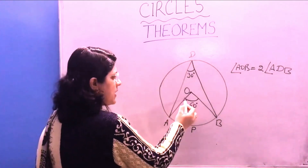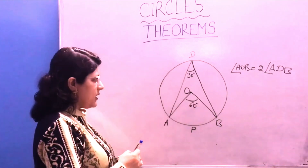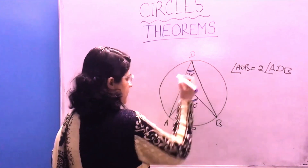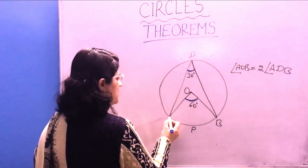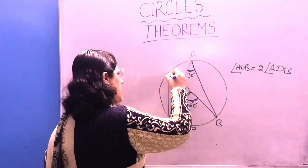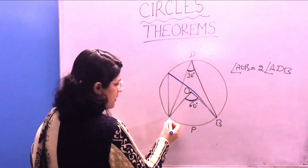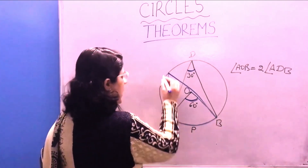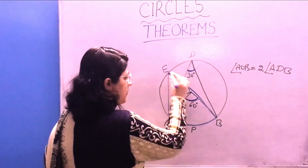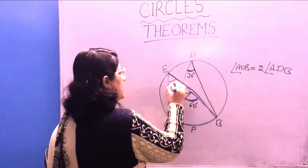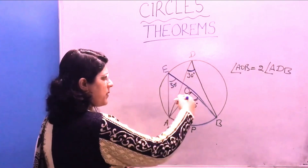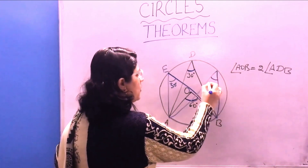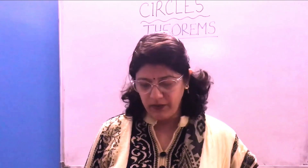This means the angle subtended at the center is double, and the angle at the circumference is half. On the remaining part of the circle, we can place a point anywhere. The arc makes an angle of AEB, and AEB is again 30 degrees. The point may be anywhere on the remaining part of the circle — it is again 30 degrees.